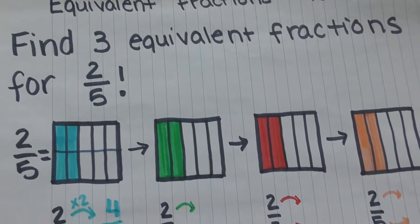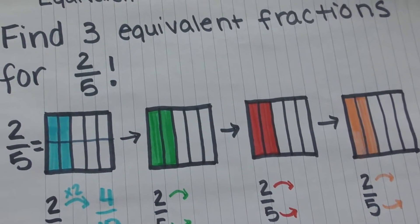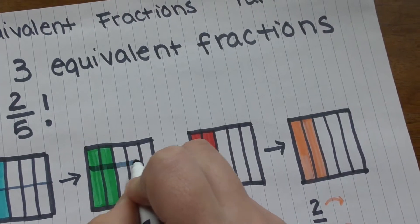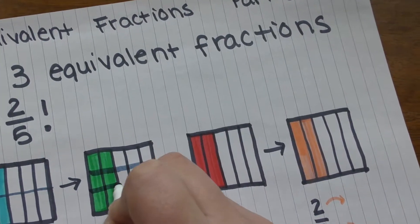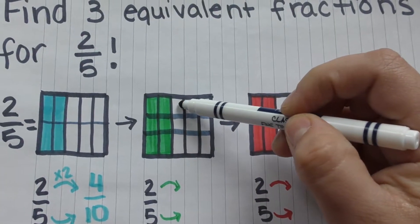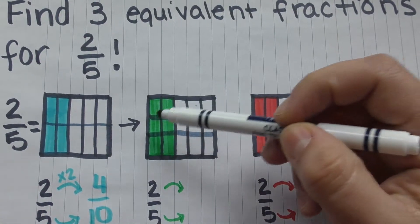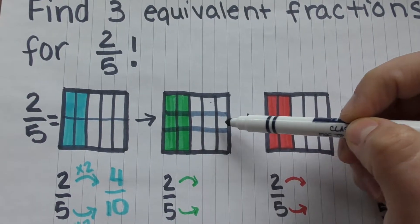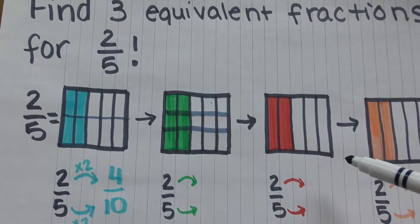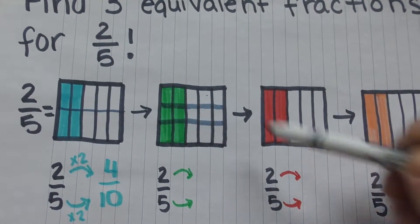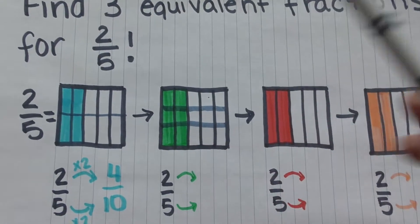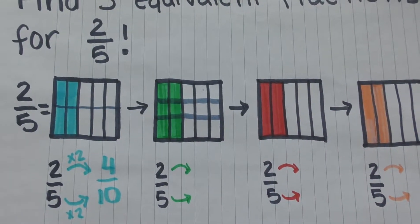Now if I look here, I can also cut it into three more equal parts to find that we have fifteen equal parts and six shaded.